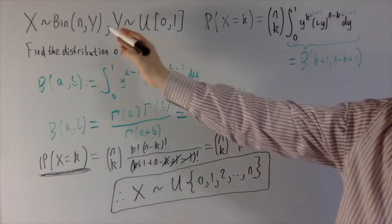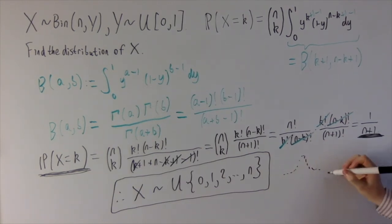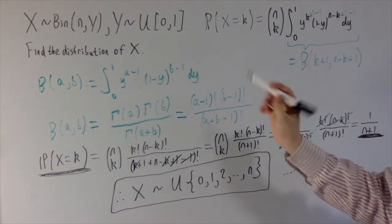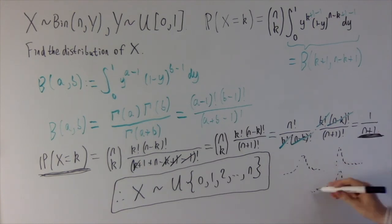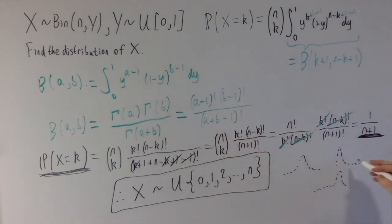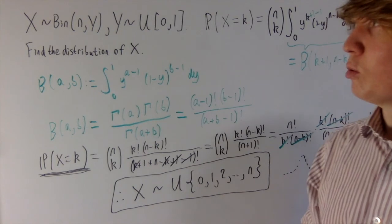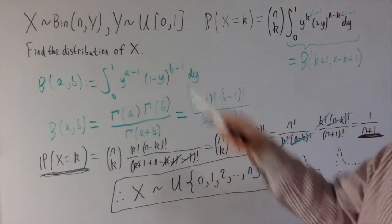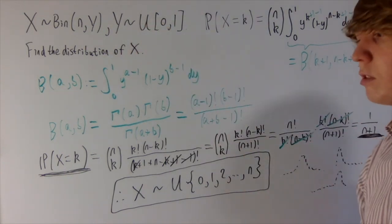The structure here is: we started with a binomial distribution, but allowing the probability of success y to be uniformly distributed. For example, if y is near a half, the binomial looks bell-shaped; if y is very small near 0, it's skewed low; if y is near 1, it's skewed high. But as you average across all of these, everything cancels out and you get a uniform distribution. So we start with a continuous uniform distribution to generate a discrete binomial, and end up with a nice discrete uniform distribution — a very satisfying result.